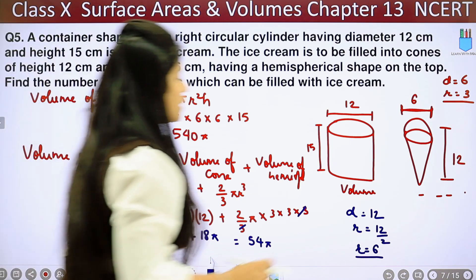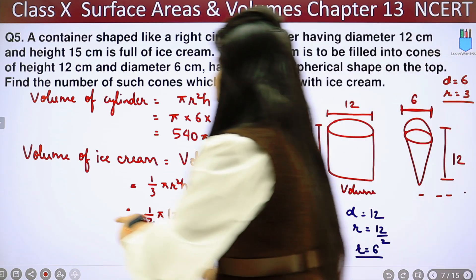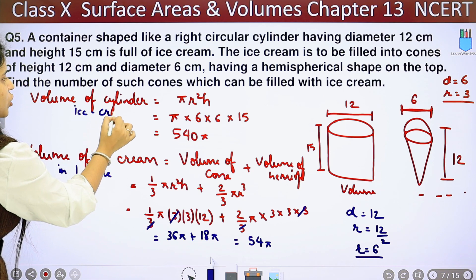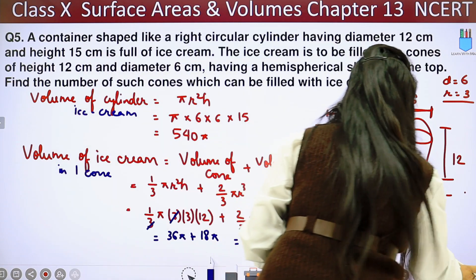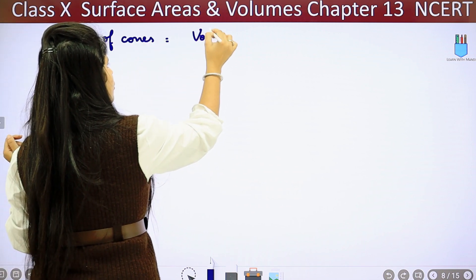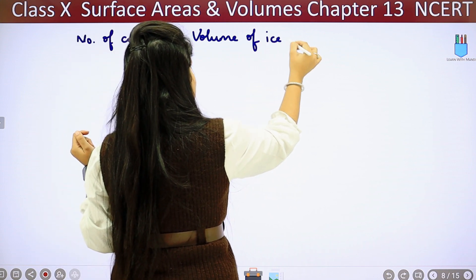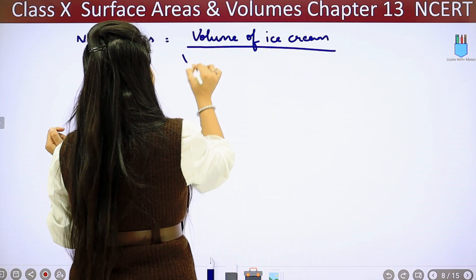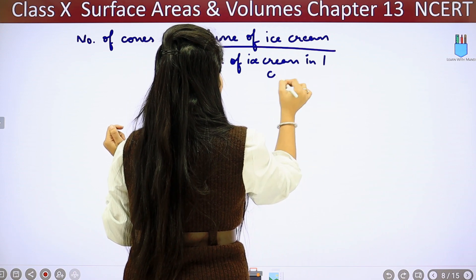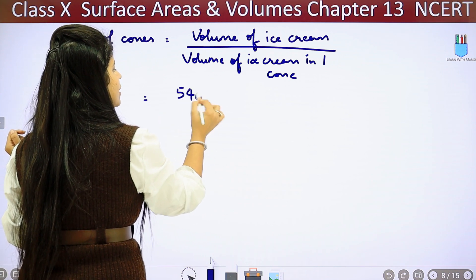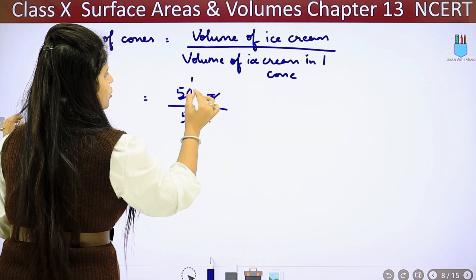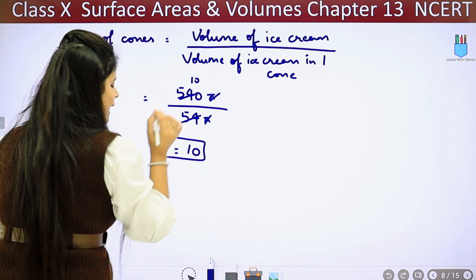Now this is volume of ice cream in one cone and this is the volume of my total ice cream. So this is our total ice cream, volume of ice cream in one cone. Now number of cones equals volume of ice cream in container upon volume of ice cream in one cone. So volume of total, we got 540π upon in one cone 54π. So π from π will cancel, it will be 10. That means n has come to us, number of cones is 10. So this is our answer.